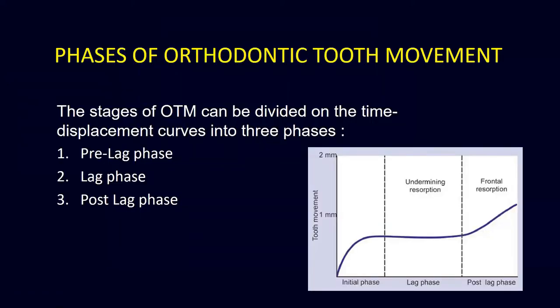Tooth movement occurs in three phases and three stages. In the first instance, when you apply any force, the tooth moves, then it is stopped, and then starts moving again — there is a period of pause. So we divide this into three stages: the initial movement after application of the orthodontic force, then a period of no movement, and third, continuous tooth movement. These are called the pre-lag phase, the lag phase (a period of no movement), and the post-lag phase.